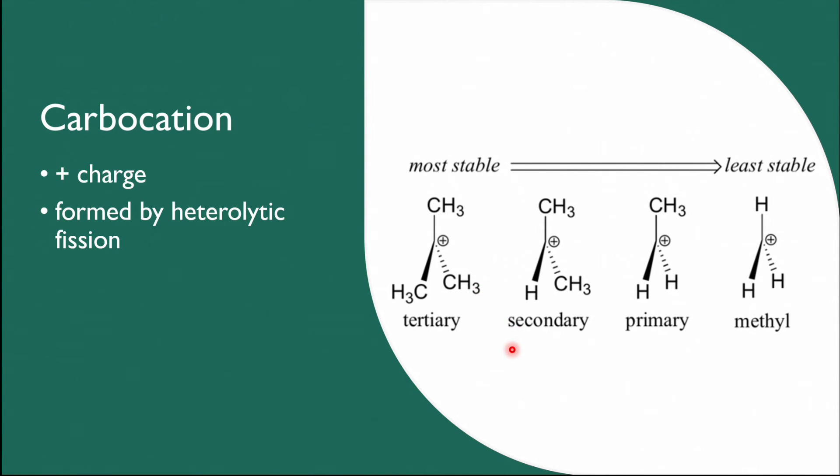Alkyl groups are carbon chains and they have low electronegativity. So instead of withdrawing electrons, they tend to donate electrons, and that's why alkyl groups are said to be electron donating groups.